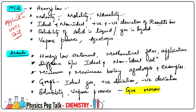Concepts like molarity, molality, normality formula and simple numerical problems will be asked. Ideal and non-ideal solution identification questions come under application level. Next, positive and negative deviation from Raoult's Law questions will appear. Solubility of a solid in liquid and gas in liquid are important concepts for application-level and skill-based questions. The next concept is vapor pressure and azeotropes.